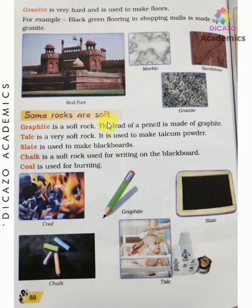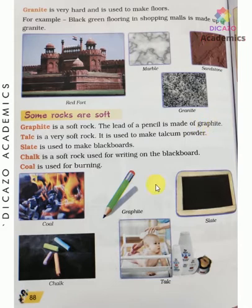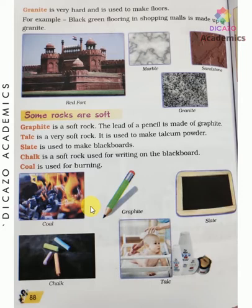Some rocks are soft. Like graphite — graphite is a soft rock. The lead of a pencil is made of graphite. When you write with a pencil, it gradually wears down because the graphite is so soft.